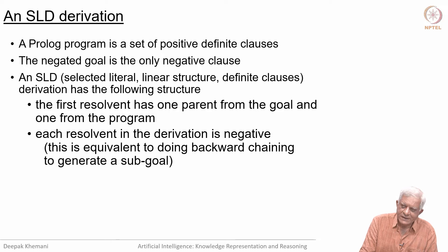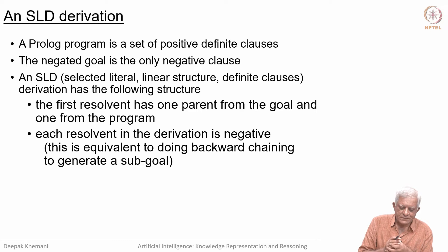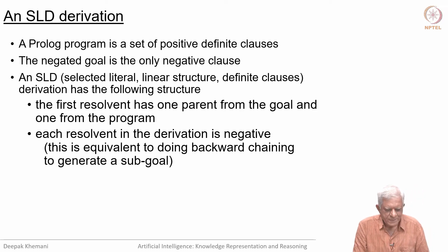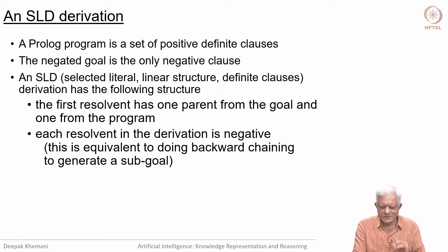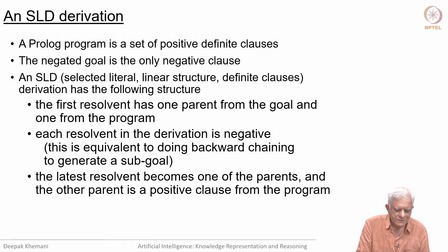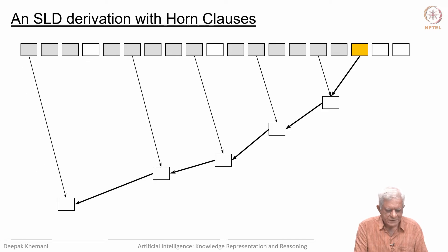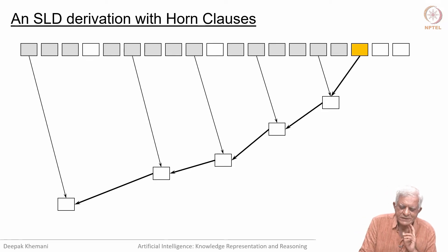Each resolvent in the derivation is negative, because you are resolving a positive clause with a negative clause, and this amounts to doing backward chaining — going from goal to sub-goal to sub-goal. SLD resolution with Horn clauses is equivalent to backward chaining. The latest resolvent becomes one of the parents and the other parent is again a positive clause from the rest of the program, so you are basically backward chaining through the program.